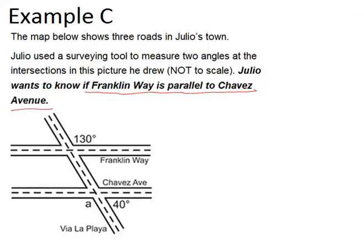Those two streets will be parallel if angle A and the 130 degree angle are congruent. Because, in that case, we would have alternate exterior angles which are congruent. And if those angles are congruent, then lines will be parallel. So let's try to figure out angle A.